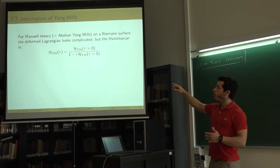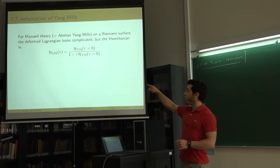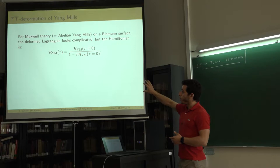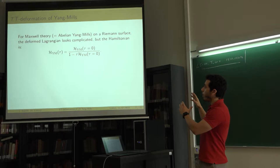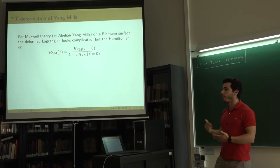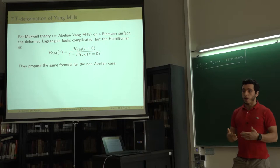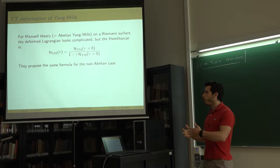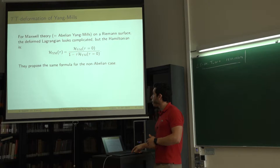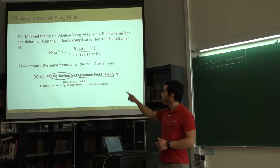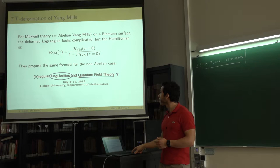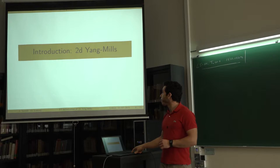The deformed theory with strength of deformation tau is given by a simple formula for the Hamiltonian. We have to be careful because there is a singularity, so we must check for which values of the parameter tau the theory is well defined. They also propose the same formula for the non-Abelian Yang-Mills theory — not derived from first principles but satisfying all constraints, so it should be the true TT-bar deformation. This concludes the TT-bar background; we now pass to the quantum field theory part.